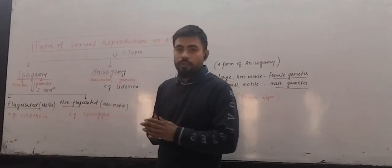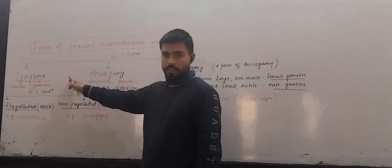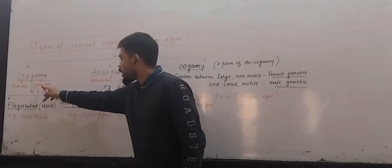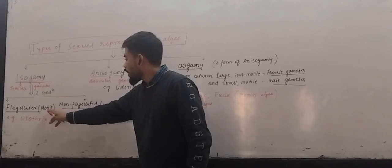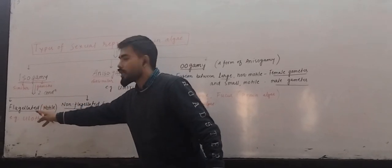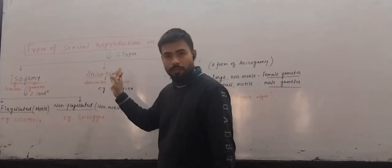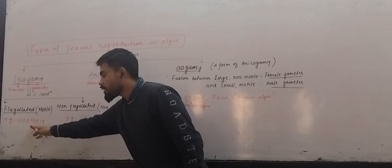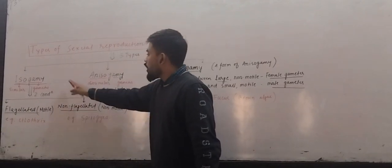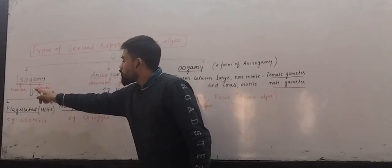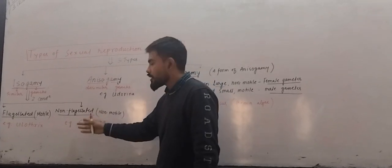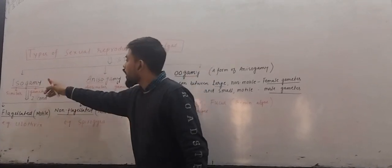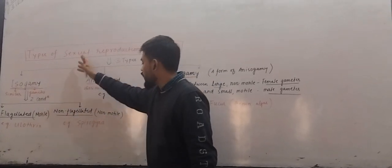Isogamy is the fusion of morphologically similar gametes. These morphologically similar gametes can have flagella, making it flagellated isogamy — the example is Ulva. When these morphologically similar gametes don't have flagella, it becomes non-flagellated isogamy.